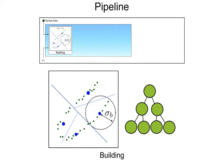Each node carries an anisotropic covariance matrix which models the local statistical distribution of the data and drives the optimal partitioning.